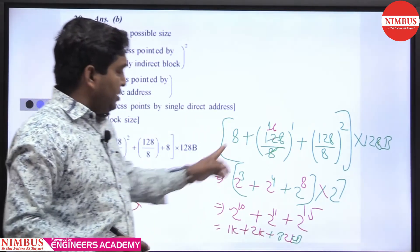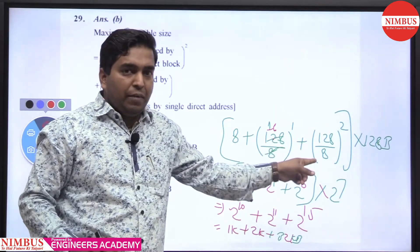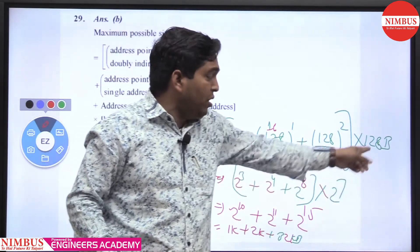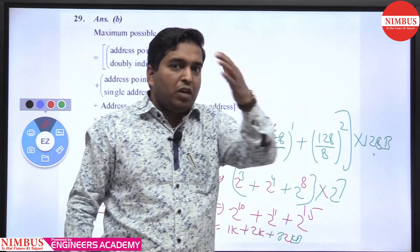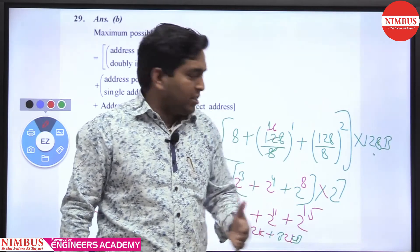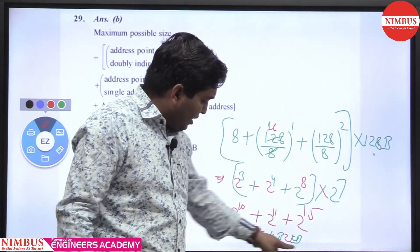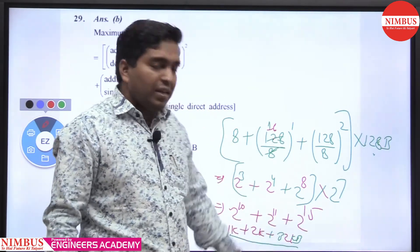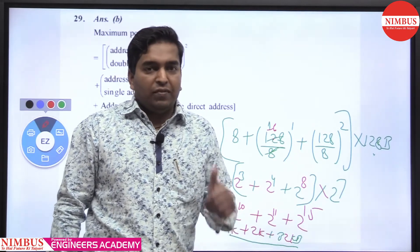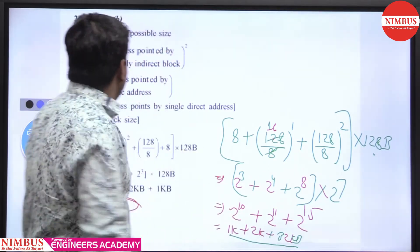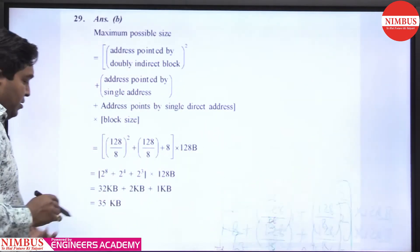So to summarize: direct plus single indirect plus doubly indirect plus triple indirect and so on, each multiplied by block size, gives the total file system size. Adding all these values together we get 35 KB. So 35 KB is the right answer — option B is correct. Thank you.